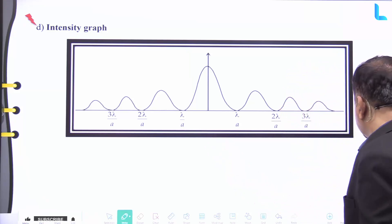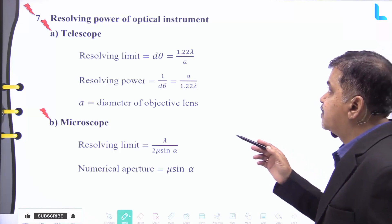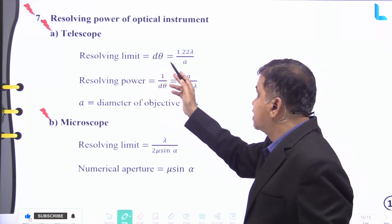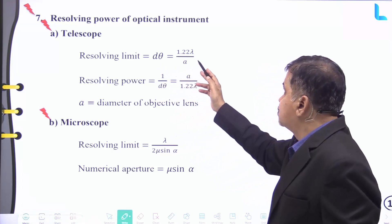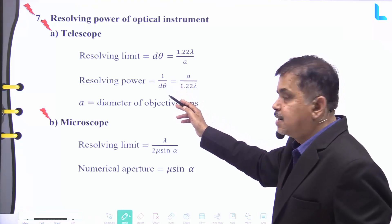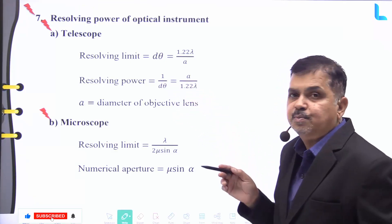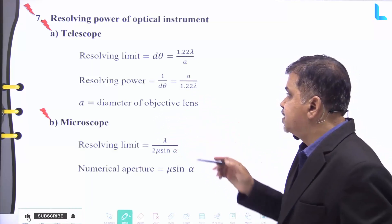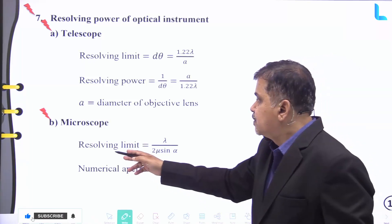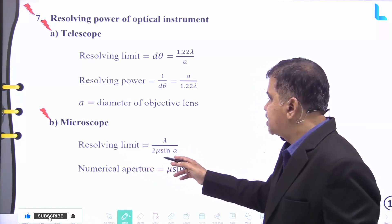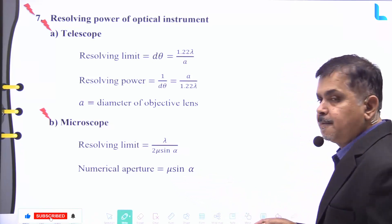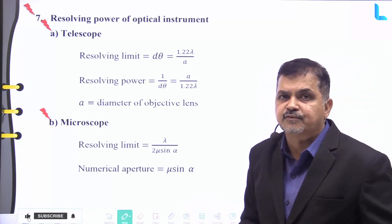The resolving power of an optical instrument: for a telescope, the resolving limit dθ = 1.22λ/a, and the resolving power = 1/dθ = a/(1.22λ), where a is the diameter of the objective lens. For a microscope, the resolving limit = λ/(2μ sin α), and the numerical aperture = μ sin α.